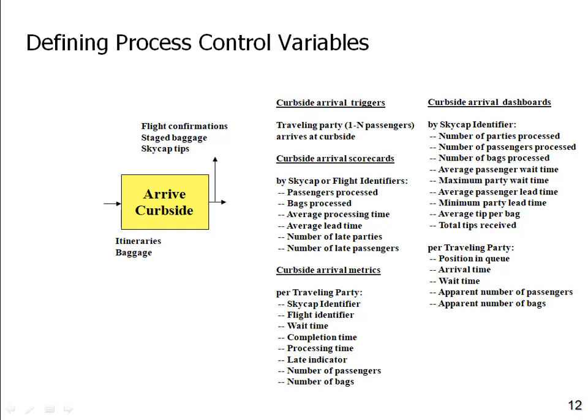To produce that scorecard, I have to be collecting metrics in the process. For each traveling party, I might capture: the skycap handling them, the flight they're heading for, the wait time in line, the completion time when they're sent to the next step, processing time within the process, an indicator of whether they're late for their flight — since bags may need to be checked in 60 minutes prior — the number of passengers, and the number of bags. The metrics capture all of this data by traveling party as they come through.